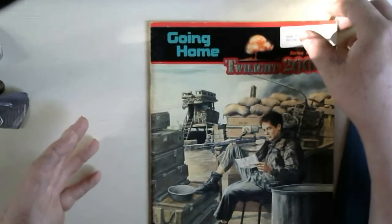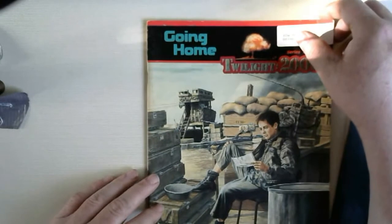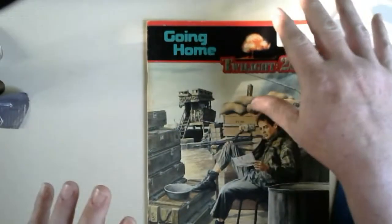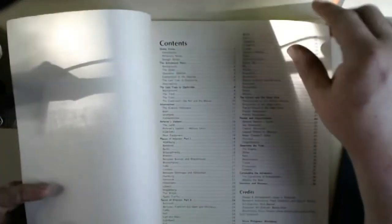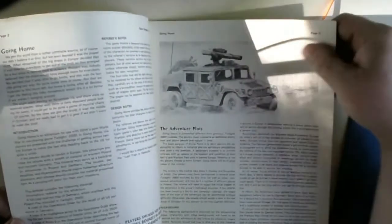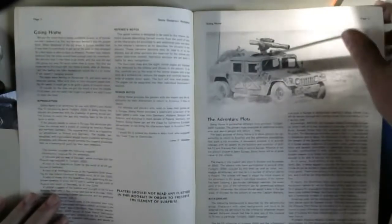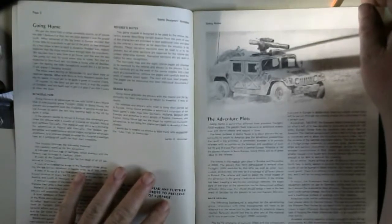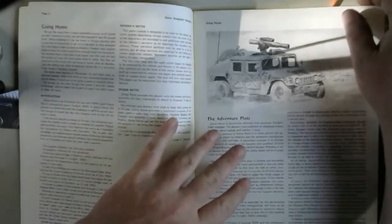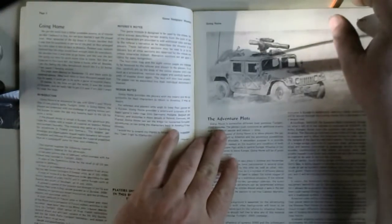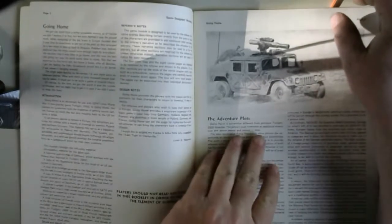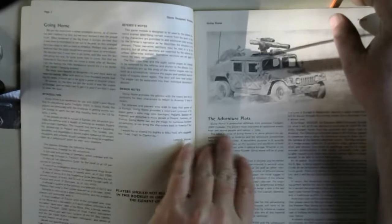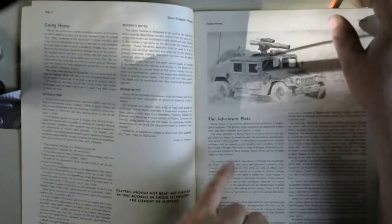At some point, either at a cliffhanger moment at the end of other modules or during a moment of slowdown, you might get this radio call that comes through, or somebody hands your group a copy of orders informing you that it's time to go home. The adventure Going Home is somewhat different from previous Twilight 2000 modules - the players must overcome an additional enemy over and above people and nature: time.